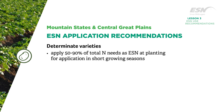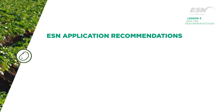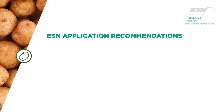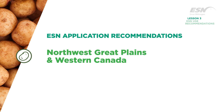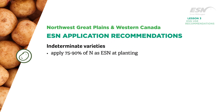For determinate varieties and/or short growing seasons in the Mountain States and Central Great Plains, apply 50 to 90 percent of total nitrogen needs as ESN at planting, with the balance as a conventional nitrogen source. In most cases, further nitrogen is not required.